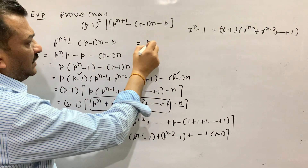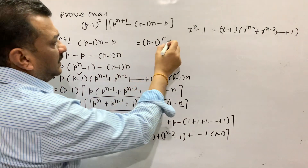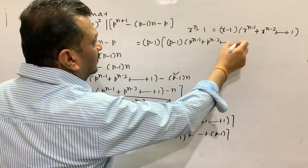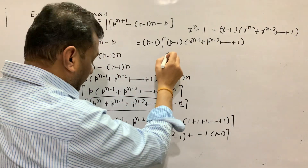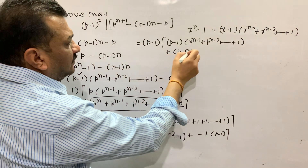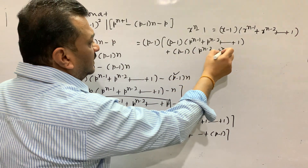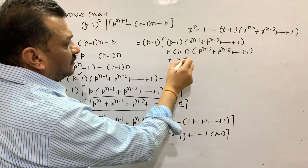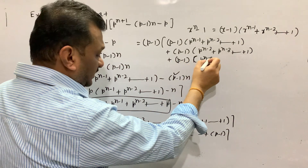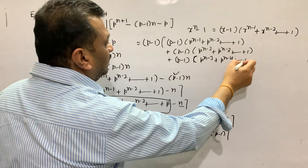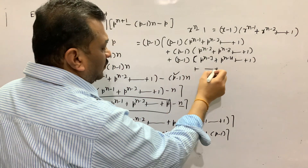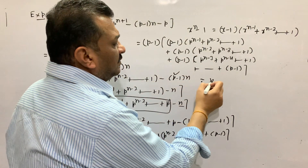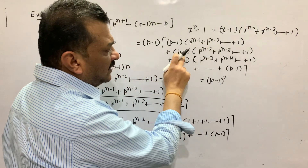(p minus 1) multiplied repeatedly — (p minus 1) into (p minus 1) into (p minus 1), up to n terms.